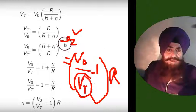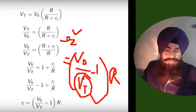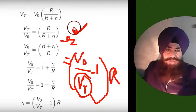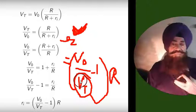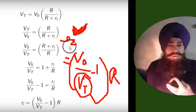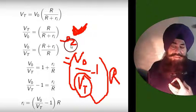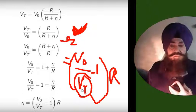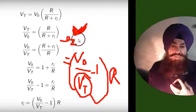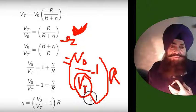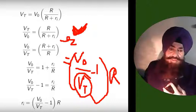VT is related to R. If ri is small — for a freshly prepared battery — then VT will be more, because ri and VT are inversely related. If ri is less, VT will be more. If ri is large — for a used battery — then VT will become less and there will be much change in the terminal voltage.